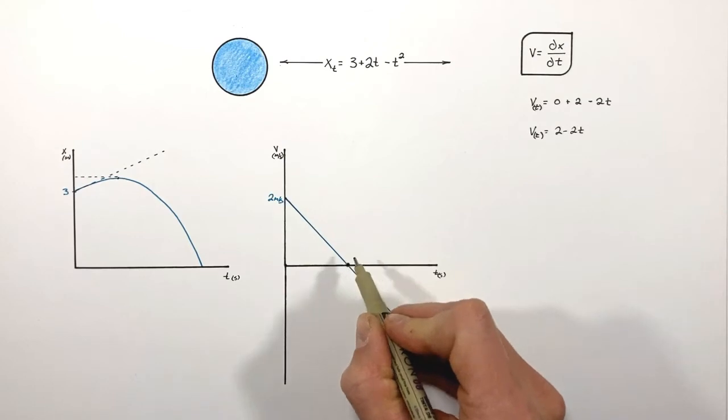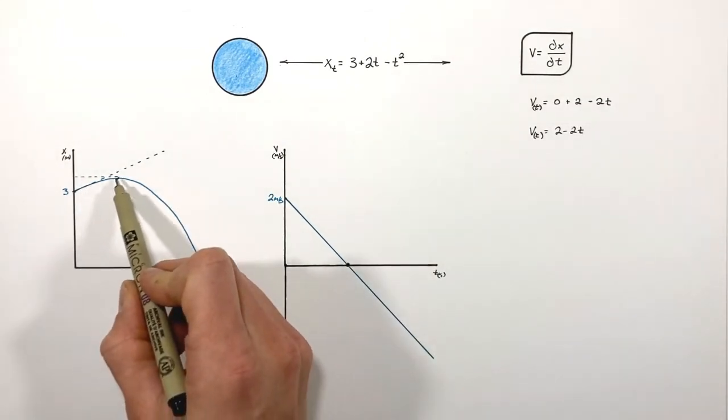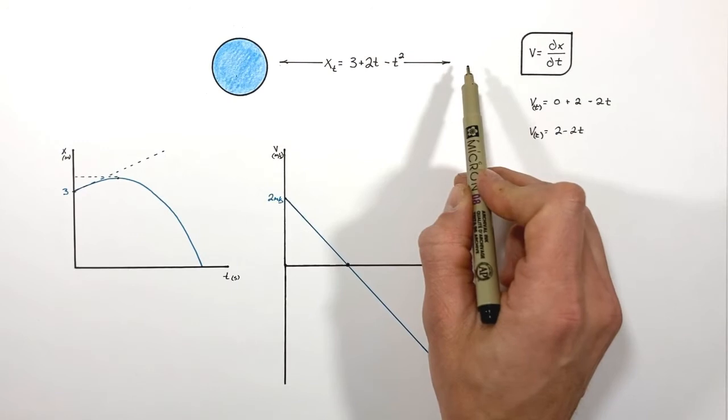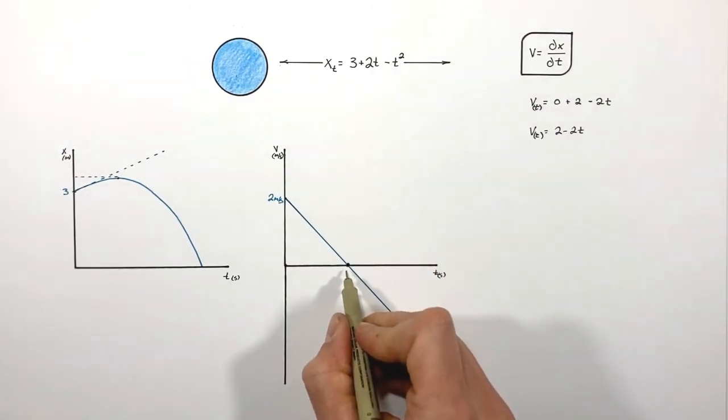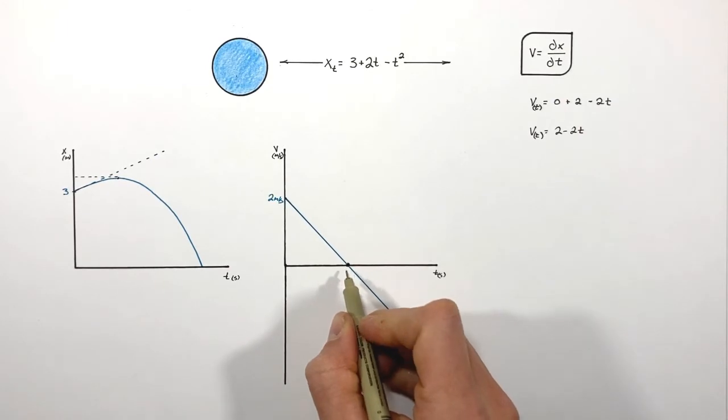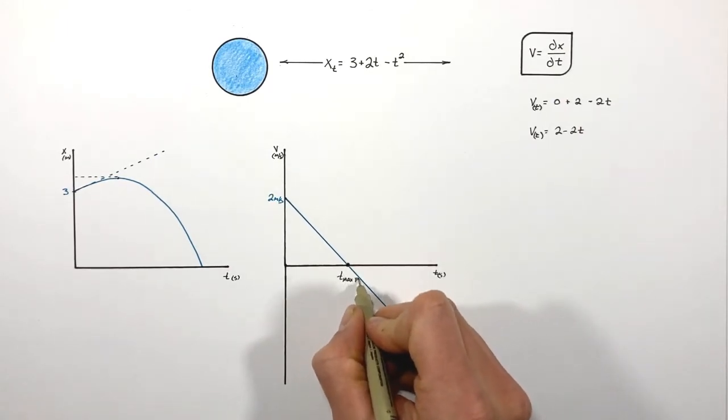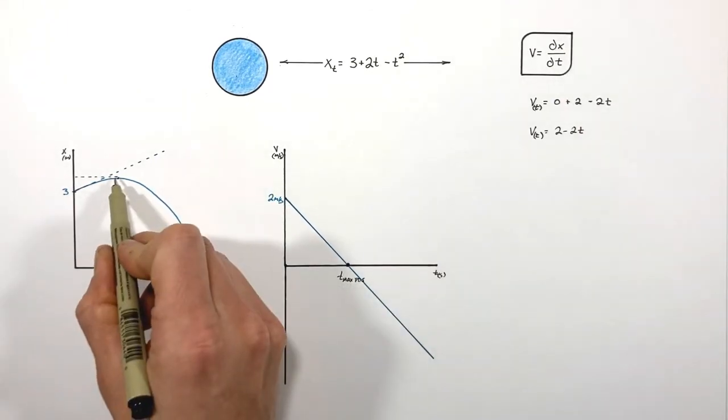And so it's this point right here in time that is going to correlate to our maximum position, or the farthest the particle ever gets to the right. So I'm going to call this point in time right here the time of maximum position, and that's the same point in time that we see right here.